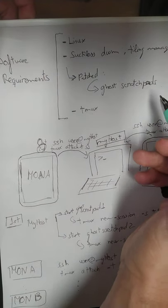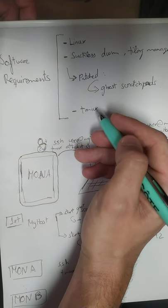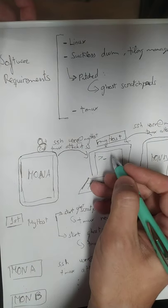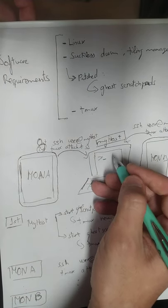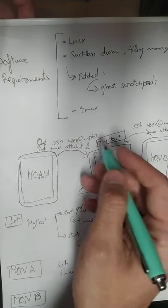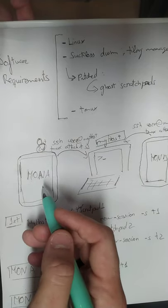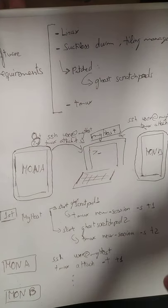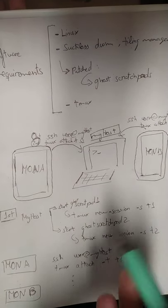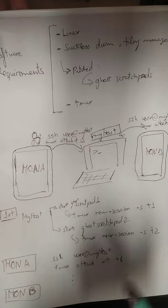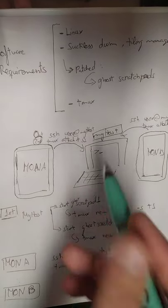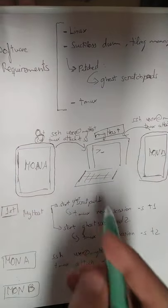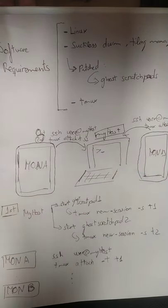I'll put the link in the description below. And you also need tmux. So as I explained, we have the middle computer — my host — and then two other computers called MON-A and MON-B. In my case they were tablets, but they're just running a terminal — Termux, in my case. And they are connected through SSH to my host, so you have to have connectivity and the SSH keys set up.